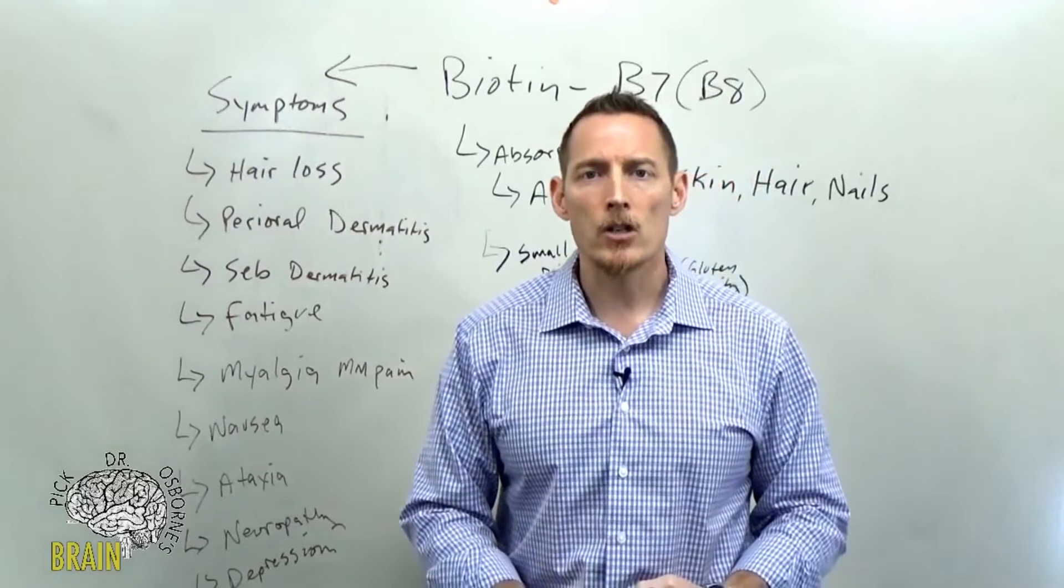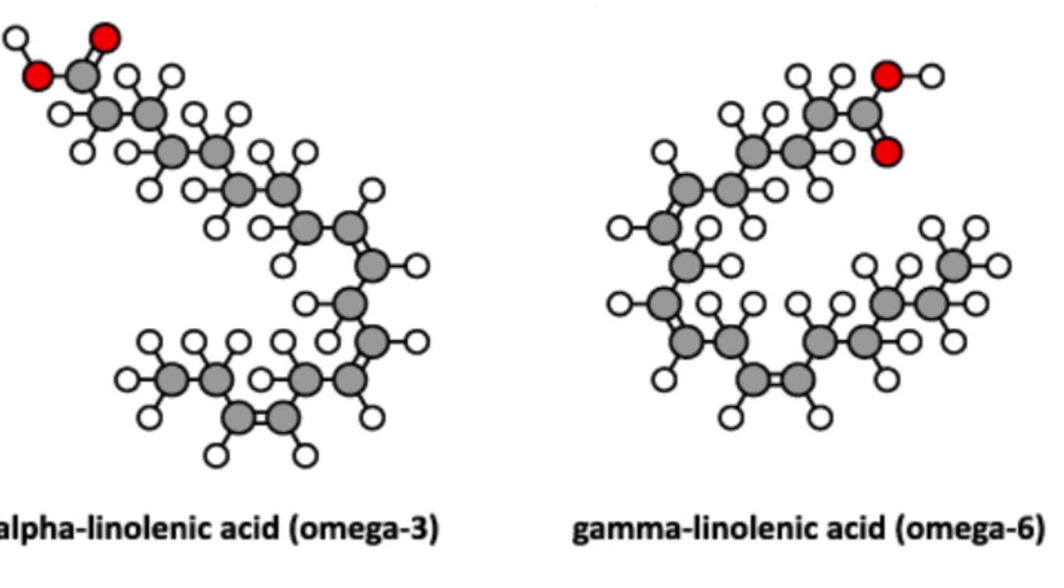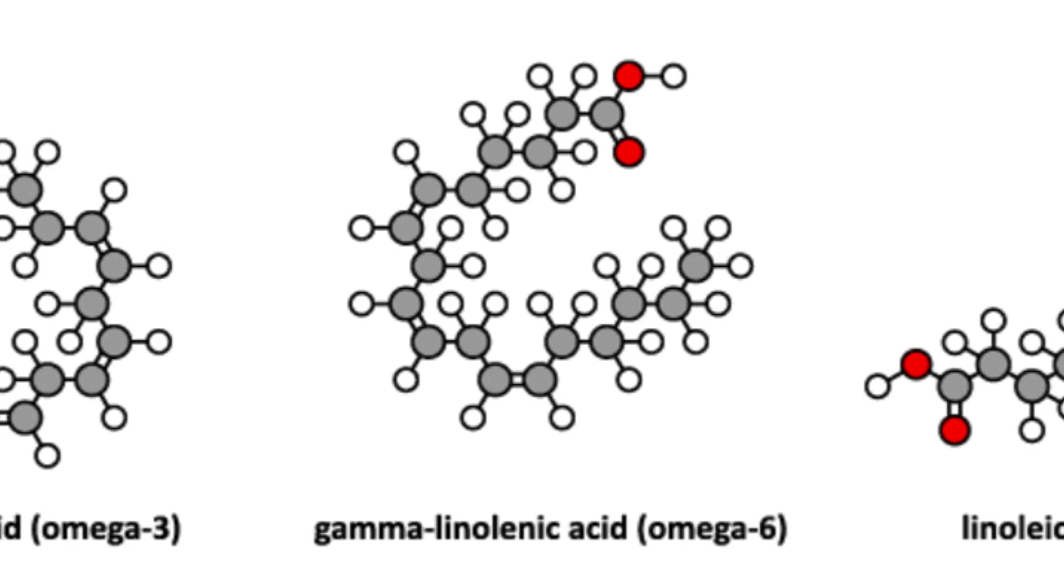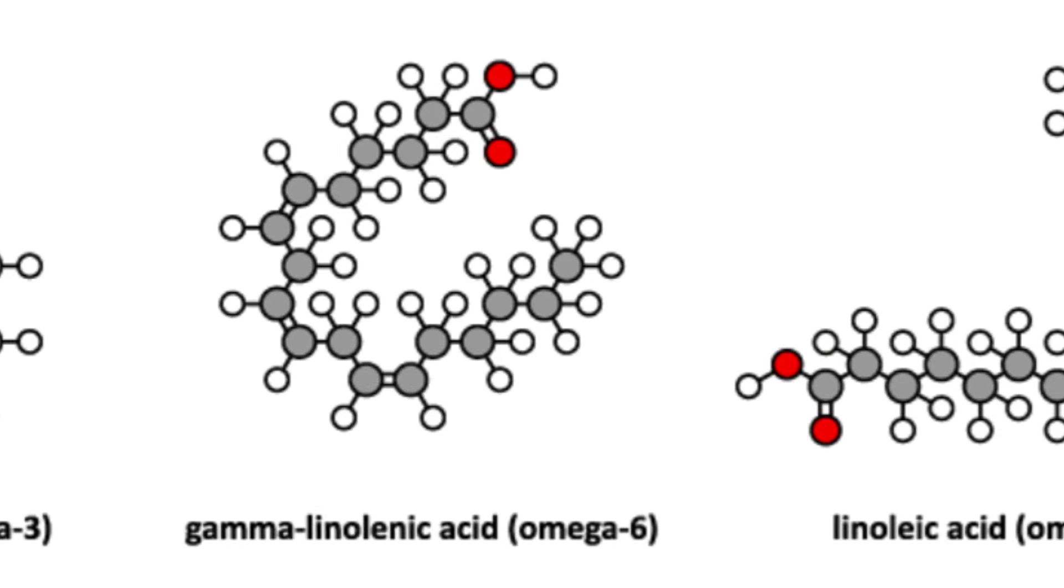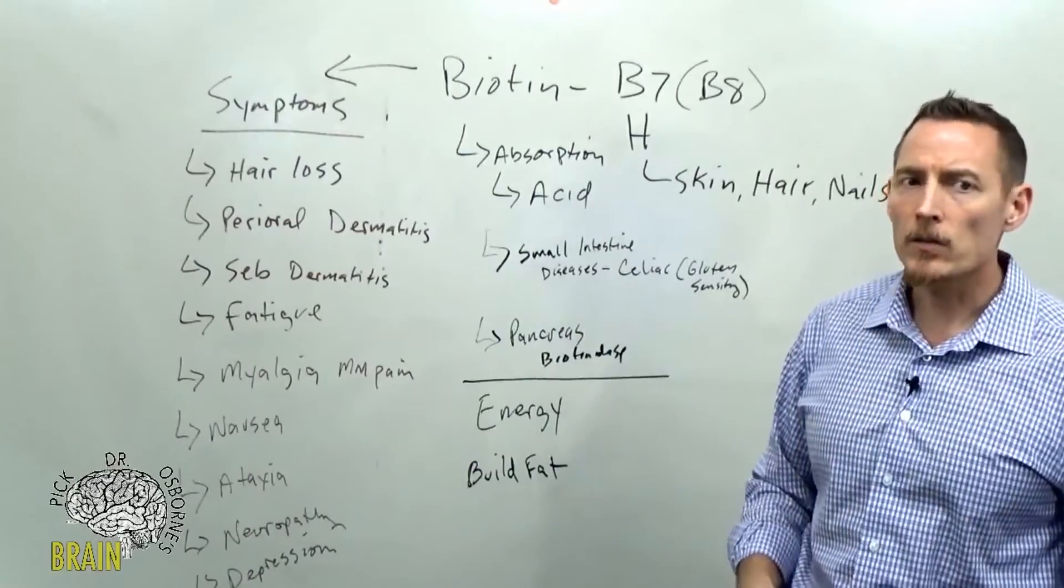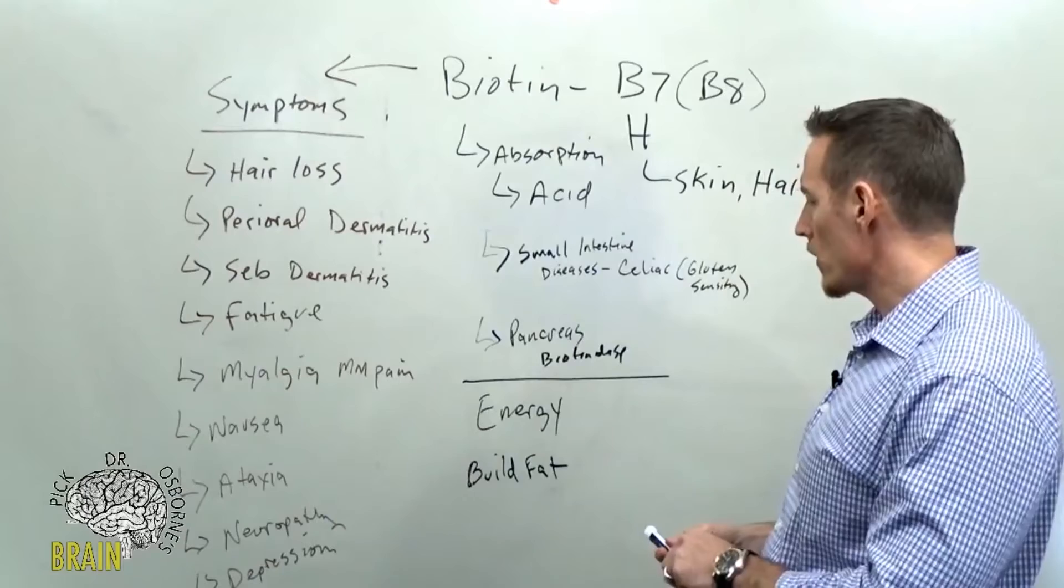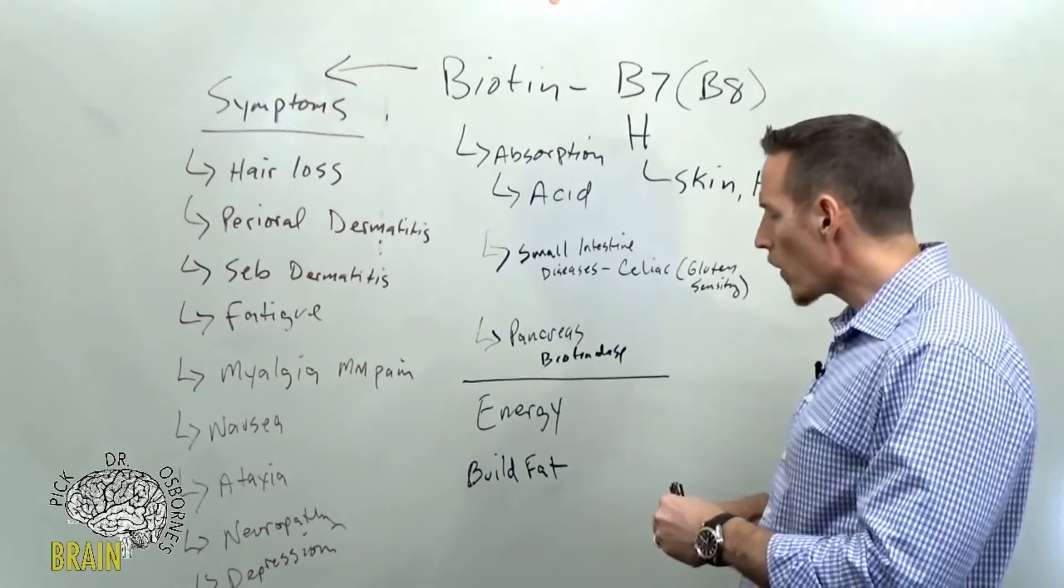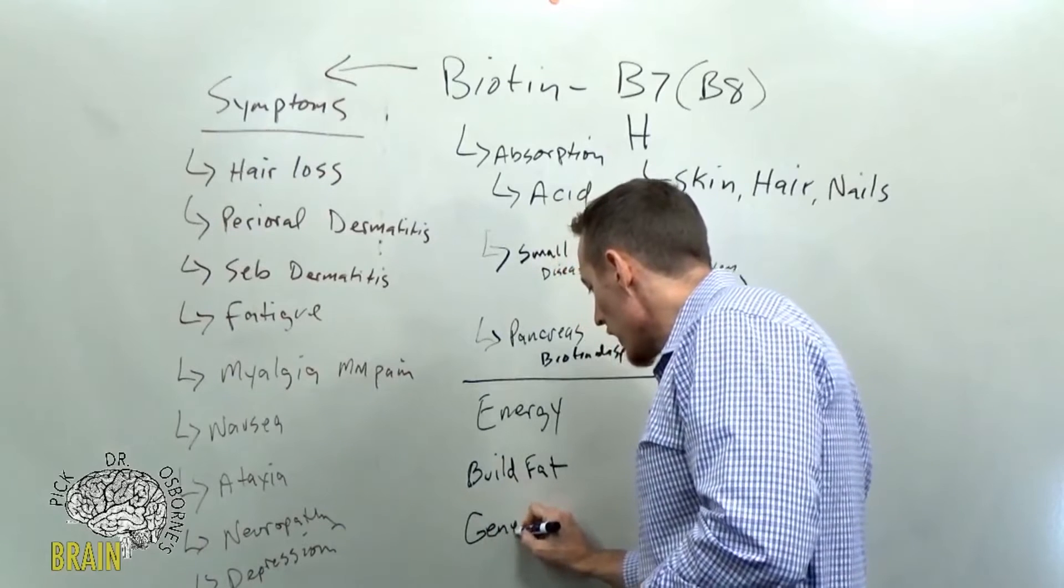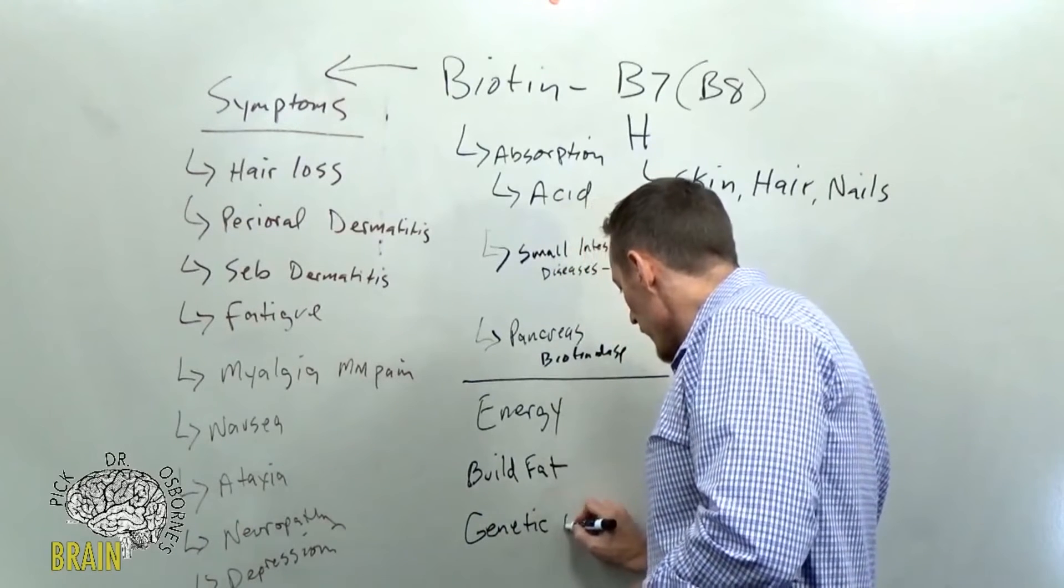Remember what fats we need to build: we need to build the oils that come out of our skin, the oils that secrete into our hair, the oils that secrete to our nails—these are all important functions of biotin. We also need oil around every cell membrane, we need oil for the elongation of essential fatty acids. Your omega-3 fats are very critical, very important, and you need biotin to aid in the processing of those.